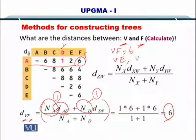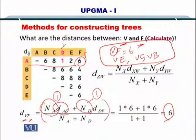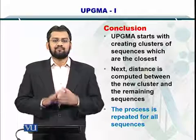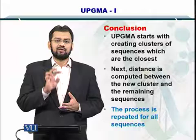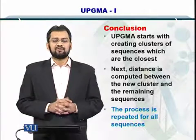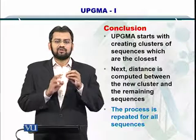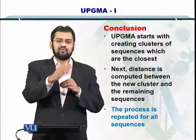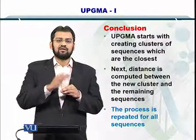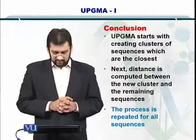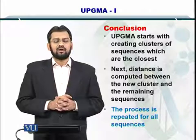Now we have computed V and E, V and C, V and B, and V and F. Since we have computed the distance between V and all other sequences, we are ready to fill and update the matrix. To summarize: UPGMA starts by computing the distance between all sequences and selects the two sequences with the smallest distance. Those two sequences are combined into a cluster, and the distance between this new cluster and every other remaining sequence is computed. This produces an updated distance matrix, and the process is repeated to keep building clusters of sequences that are close to each other.